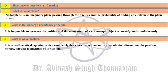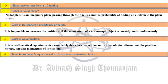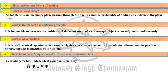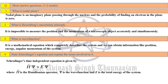What is a wave function? A wave function is a mathematical equation which completely describes the system. Once we know the wave function of a system, we can obtain information like position, energy, and angular momentum about the system. State Schrödinger's equation and explain the terms. The time-independent Schrödinger's equation is: H·Ψ = E·Ψ, where H is the Hamiltonian operator, Ψ is the wave function, and E is the total energy of the system.